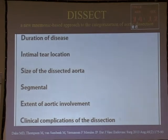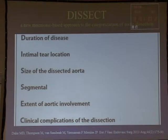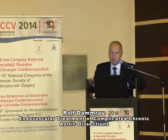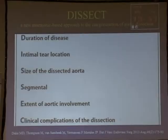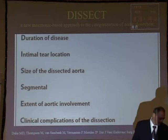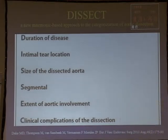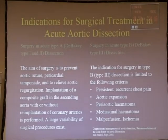For our endovascular approach, the standard classification is not sufficient, so this classification was established by Dake and Matt Thompson — a new classification called DISSECT — where you can address a lot more information: duration of disease, intimal location, the size of the dissected aorta, which segments are involved, the extent of aortic involvement, and if there are any clinical complications.